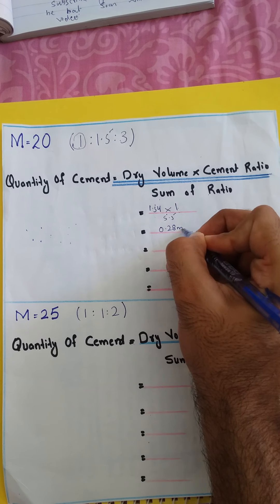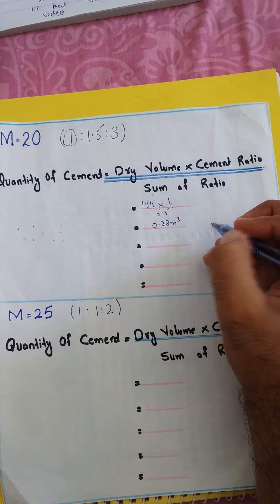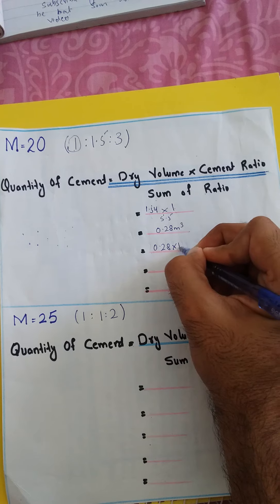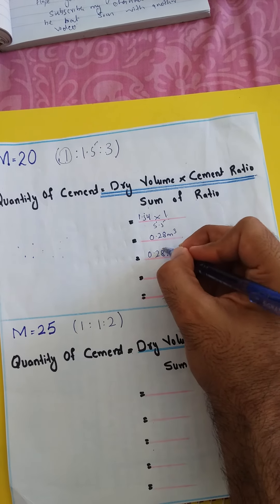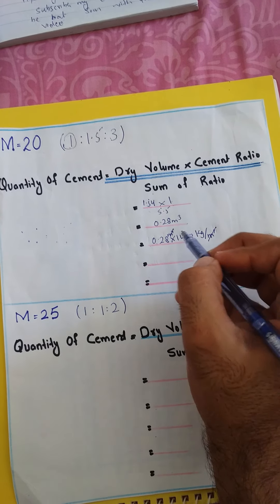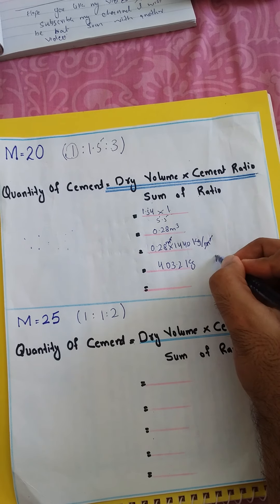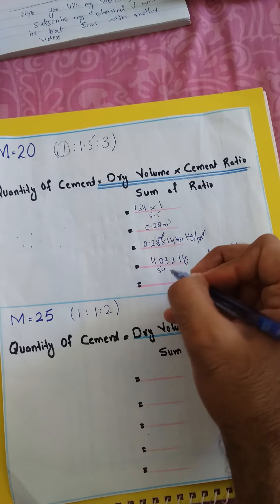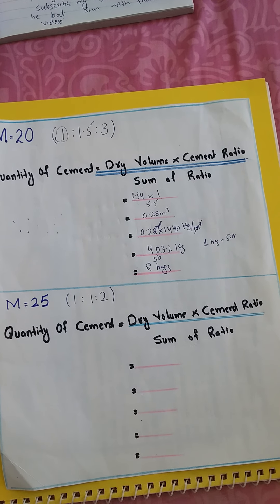Multiplying and dividing, we get 0.28 cubic meters of cement. We multiply this by the density of cement, 1440 kg per cubic meter. Cubic meter cancels, giving us 403.2 kg. Since one bag equals 50 kg, dividing by 50 we get 8 bags for M20 grade.